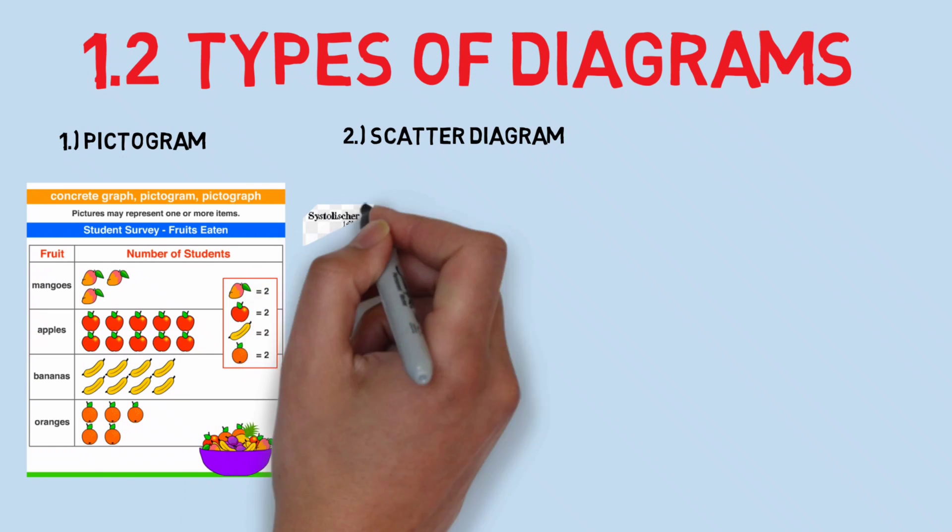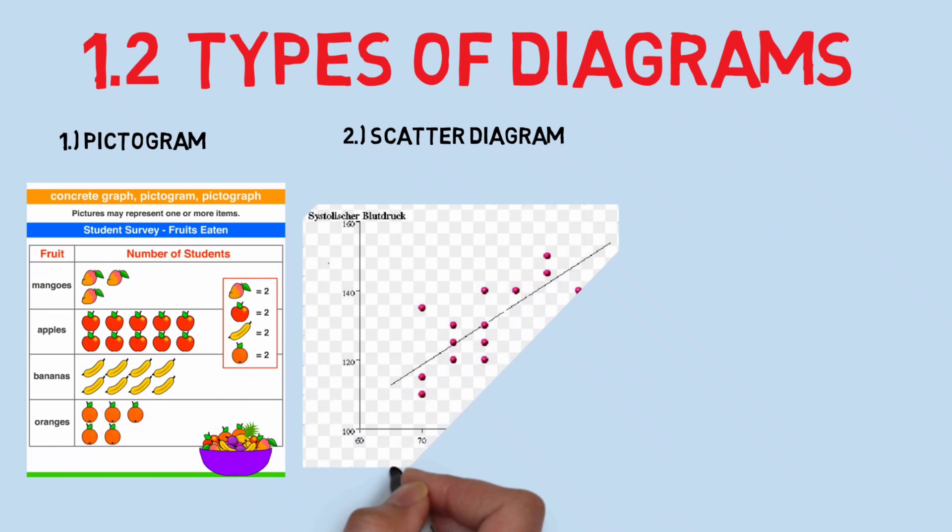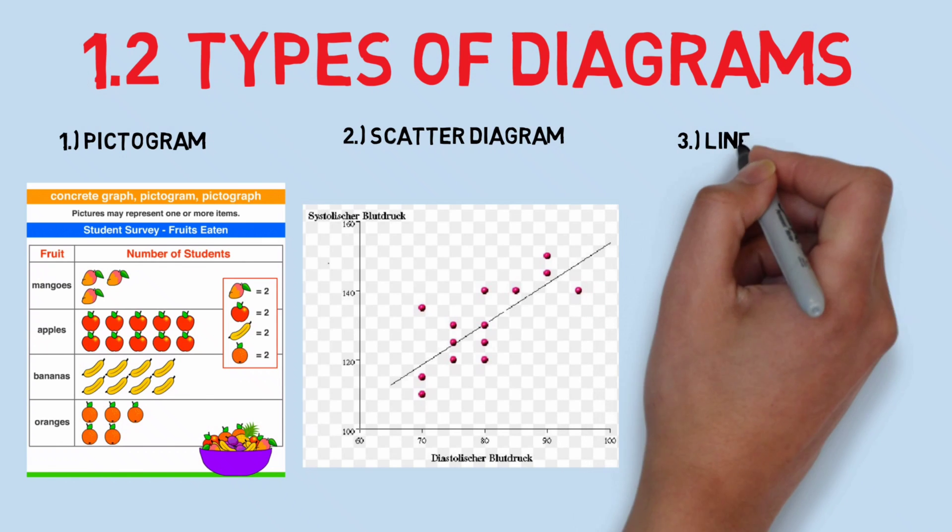Number two, scatter diagram. Number three, line diagram.